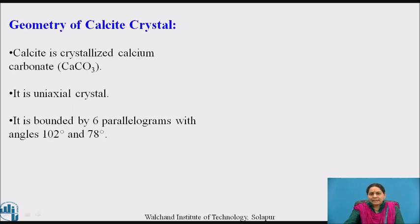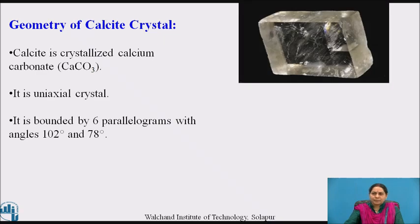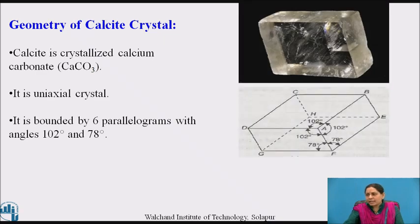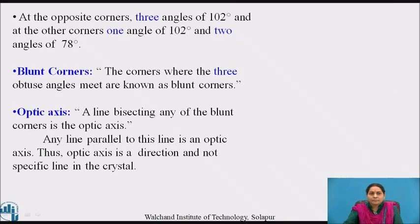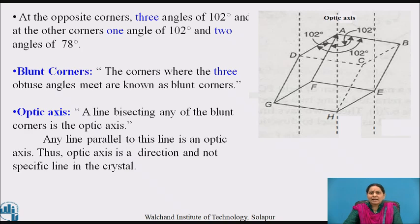Now let us see in detail the structure of calcite crystal. Calcite is a common naturally occurring substance; a large calcite crystal is colorless and transparent. It is also called Iceland spar. Naturally occurring calcite crystal has a rhombohedral structure. Calcite is crystallized calcium carbonate, CaCO₃. It is a uniaxial crystal bounded by six parallelograms. At the opposite corners, three angles measure 102 degrees, and at the other corner, one angle measures 102 degrees and two angles measure 78 degrees.